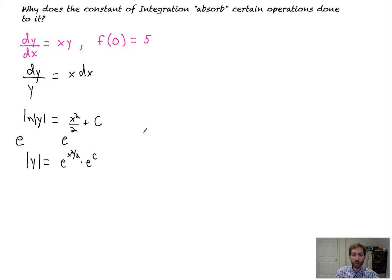To undo the absolute value of y, remember if that's equal to some number, that's equal to plus or minus 2. So now I'm going to do the absolute value. We get y equals plus or minus. I'm going to put the e to the c in the front. I'm not absorbing anything in this one so I can show you how and why it works.